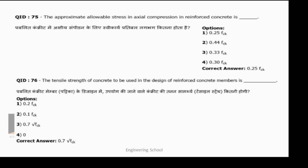The approximate allowable stress in axial compression in reinforced concrete: the option given is 0.4 fck, but the correct answer is 0.25 fck. The SSC answer was 0.25 fck, which is correct.